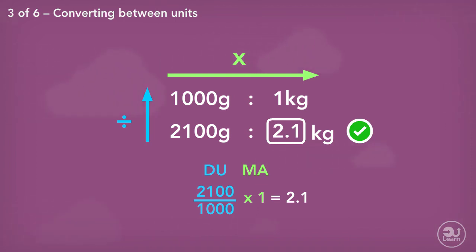Therefore, 2,100 grams is equivalent to 2.1 kilograms.